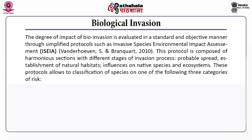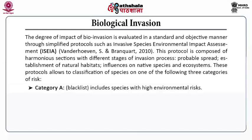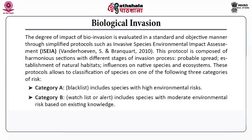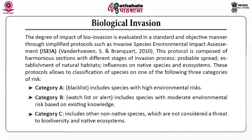Van der Hoeven and Banker 2010 has given this data. This protocol is composed of harmonious sections with different stages of invasion processes: probable spread, establishment of natural habitats, and their influence on native species and natural ecosystems. These protocols allow classifying species into one of three categories of risk. Category A is the black list — it includes species with high environmental risks. Category B is the watch list or alert list — it includes species with moderate environmental risk based on existing knowledge. Category C includes non-native species that are not considered a threat to biodiversity and native ecosystems.